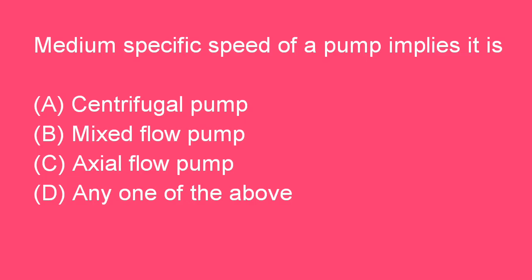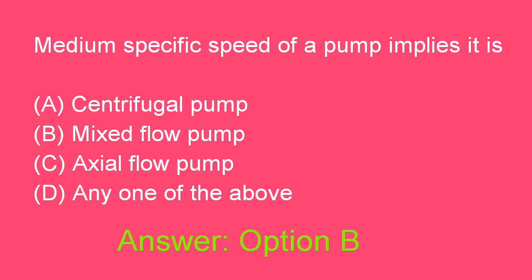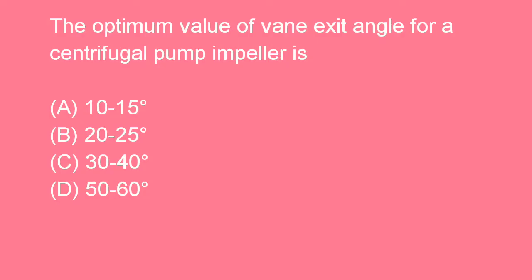Next question: Medium specific speed of a pump implies it is a mixed flow pump. Option B is right. Question: The optimum value of bend exit angle for centrifugal pump impeller is 20 to 25 degrees. Answer B is right.